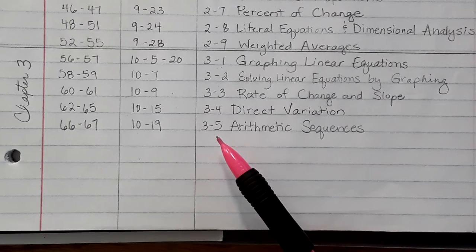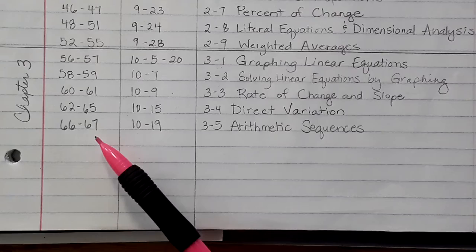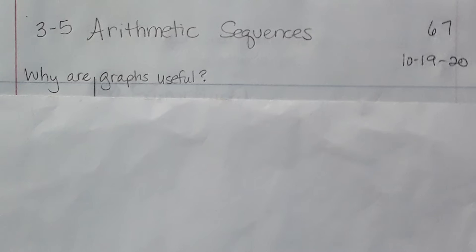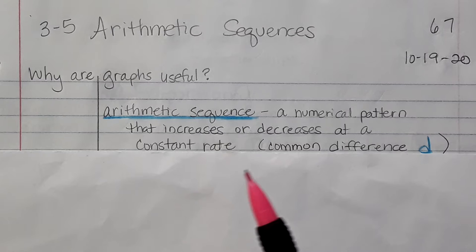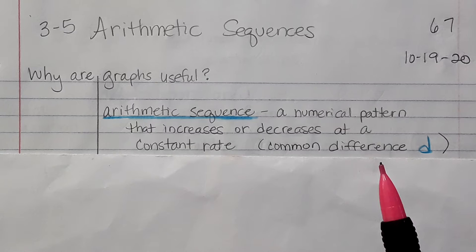In this lesson, we are going to look at 3-5 Arithmetic Sequences. Let's begin on page 67 in our notes. An arithmetic sequence is a pattern with your numbers, a numerical pattern. It's going to increase or decrease at a common rate. This common rate is called the common difference, or d.